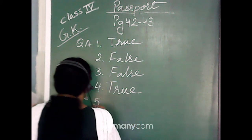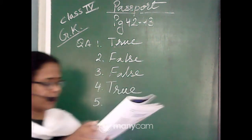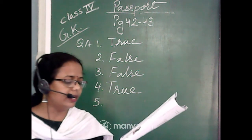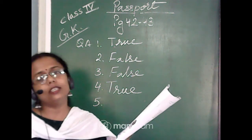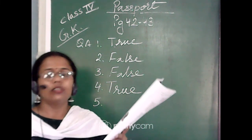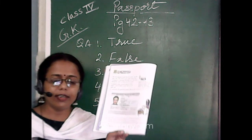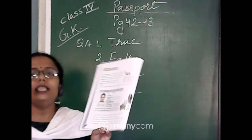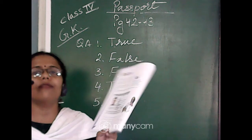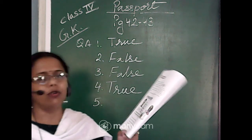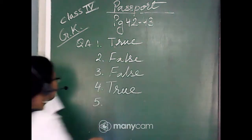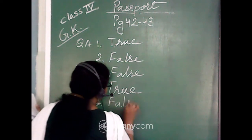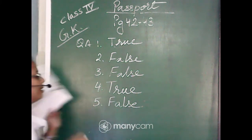Statement five: 'The signature of the passport holder is on his or her photograph.' We can very clearly see that there is no signature needed on the photograph of the passport — the photograph should be clear. So this statement is false.